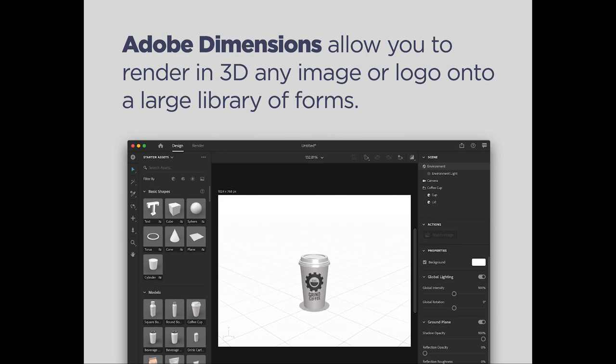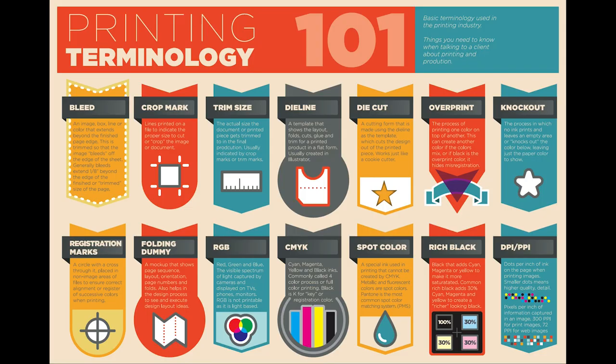And there we have it, folks. Now we understand what live trim and bleed is, what a die line and die cut are and how to make them, overprinting, knocking out colors, understanding RGB, spot colors, CMYK, rich black, resolution, and printer's marks. I hope this was really informative — just very basic terminology, and hopefully this helps you understand when somebody says something, you'll know exactly what they're talking about. Check out my other videos and subscribe, and we'll see you next time for more fantastic content.